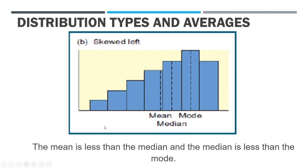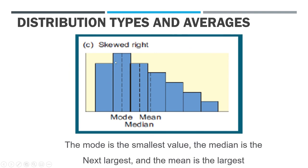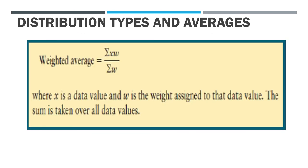There are times when the mean is less than the median and the median is less than the mode — this happens with a skewed left distribution. For a skewed right distribution, the mode is the smallest value, the median is the next largest, and the mean is the largest. If you see a distribution of either type, you already know the arrangement of the mode, median, and mean.